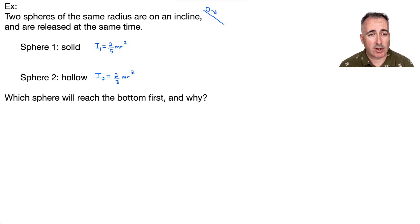So one easy way to solve this is just to think about, remember what the definition is of moment of inertia. It is the resistance to rotational change. So in this case, which of these has the smallest moment of inertia? Well, 2/5 is smaller than 2/3. So that means this one right here has the smallest moment of inertia.